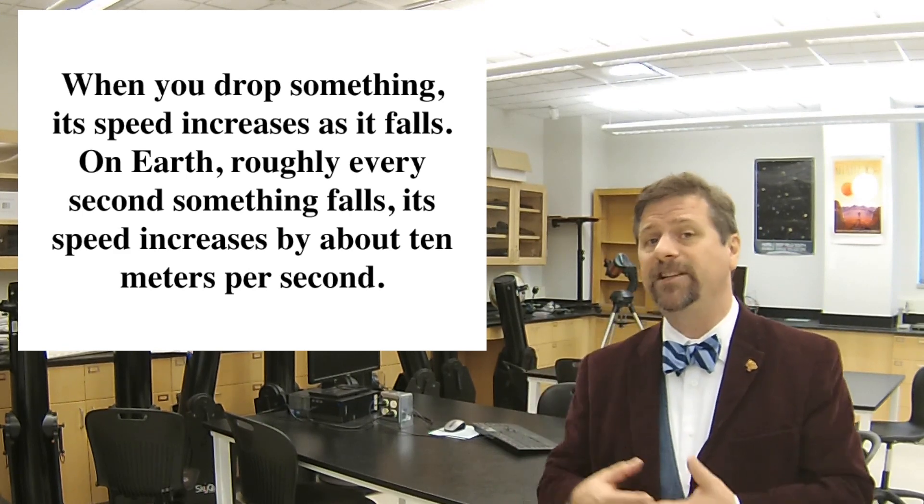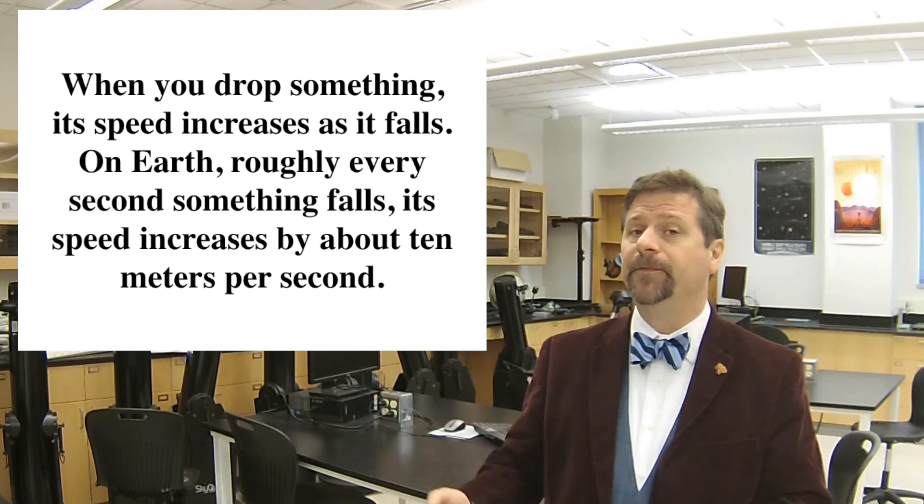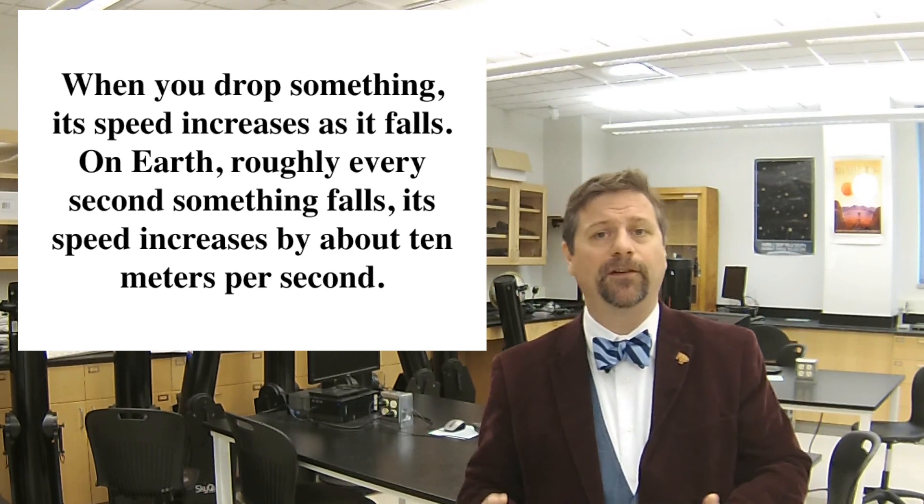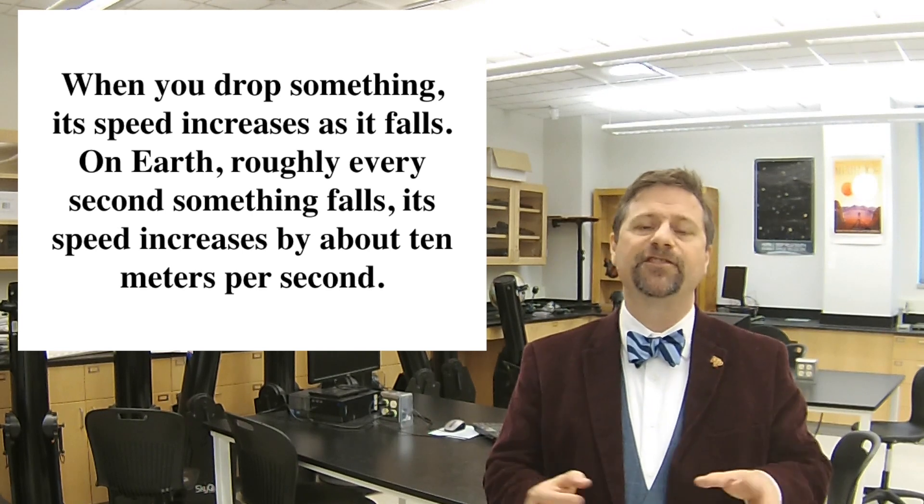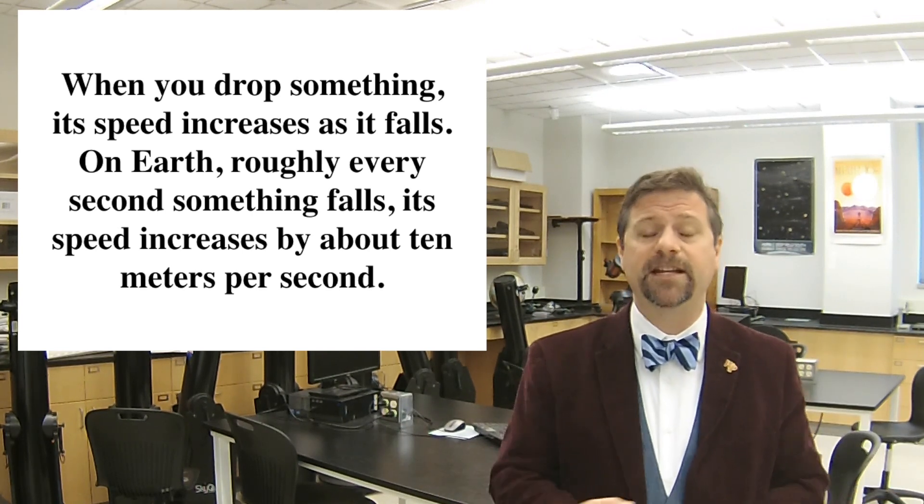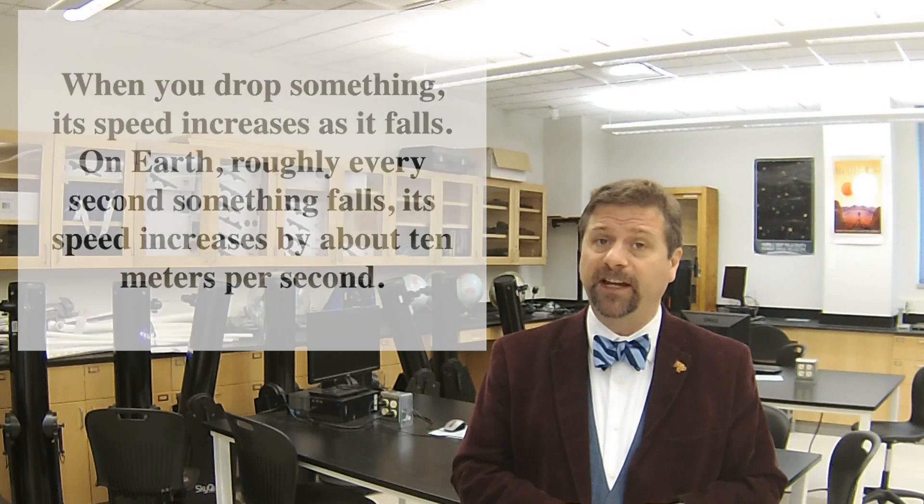Gravity accelerates you downward and the rate of acceleration at Earth's surface is 9.8 meters per second squared. So every second it falls, it goes 9.8 meters per second faster. Call it 10. The first second it drops 10 meters per second, the second second is 20, the third second is 30, and so on.